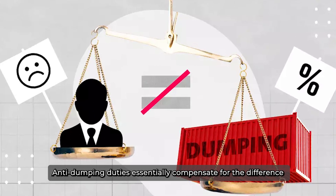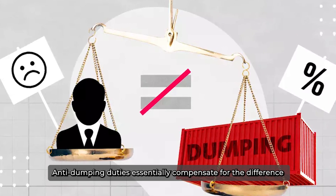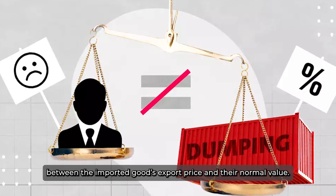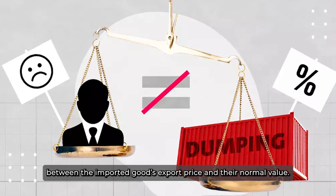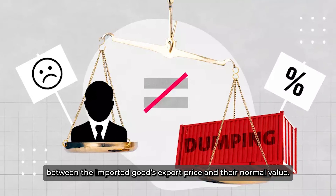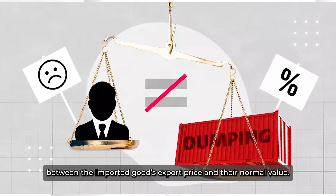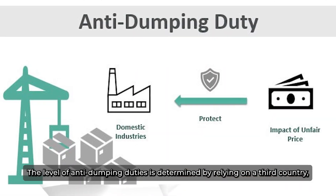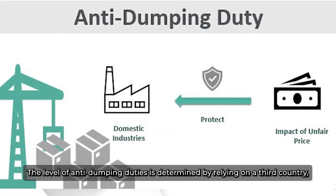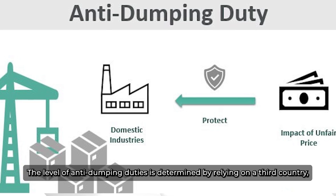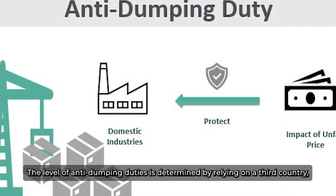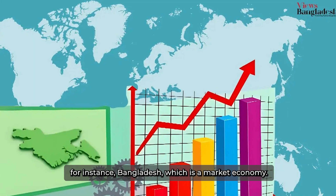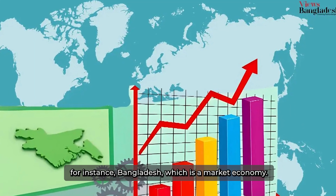Anti-dumping duties essentially compensate for the difference between the imported goods' export prices and their normal value. The level of anti-dumping duties is determined by relying on a third country, for example Bangladesh, which is a market economy.